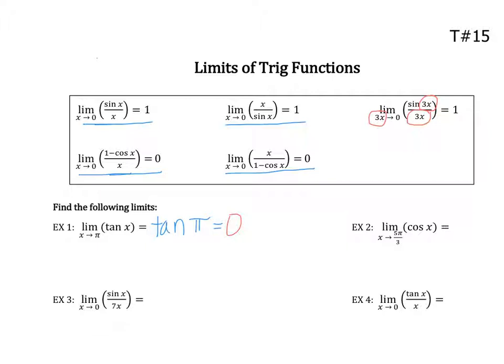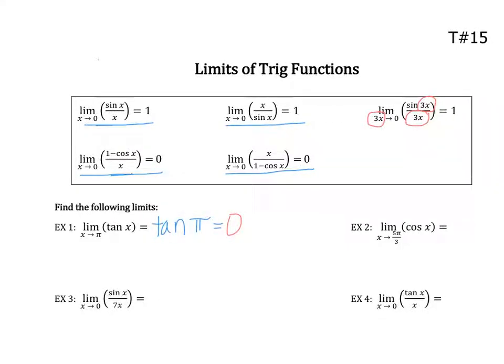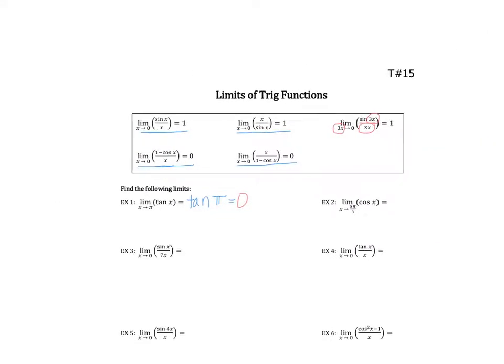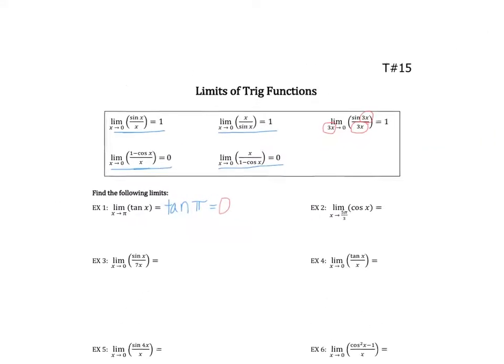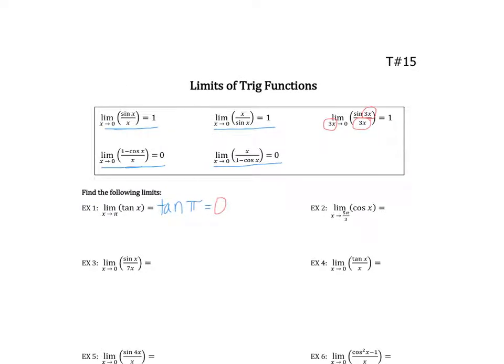You try example two. That should be a fast one as well. So of course I have the cosine of 5π over 3. And from the unit circle, again that's a memory thing, the cosine of 5π over 3 is equal to 1 half. So my limit is 1 half.